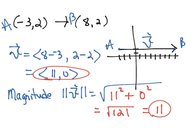Which again, should make sense to us because if we go back and look at vector v, it is 11 units long.